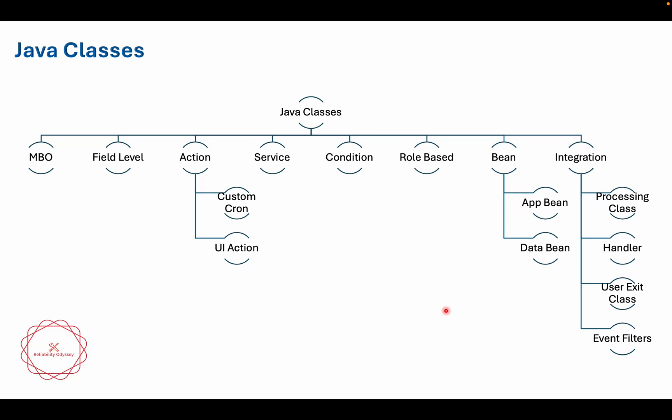Let us talk about the different kinds of Java classes that we have. Maximo is a J2EE product and it is written in Java. All the business logic is in Java, but there are different kinds of classes available, and we can also create different kinds of classes if we want to modify the out-of-the-box behavior. These classes are divided on the basis of what kind of work they can do.